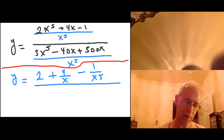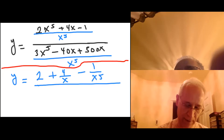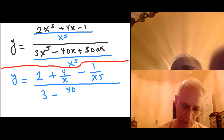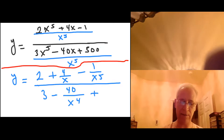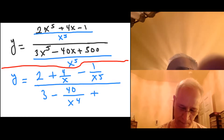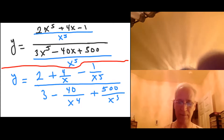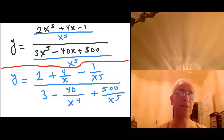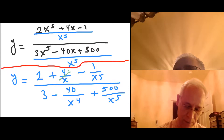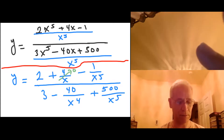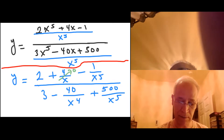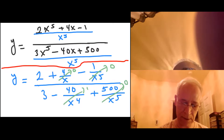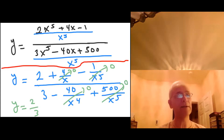In the denominator, x to the fifth cancels x to the fifth, giving 3, minus 40 over x to the fourth, plus 500 over x to the fifth. As x gets larger and larger, the terms with x in the denominator all go to 0. So we're left with y equals 2 over 3, which confirms that 2/3 is the horizontal asymptote.